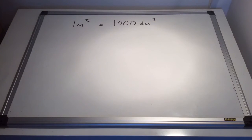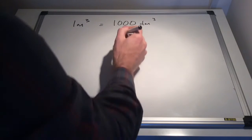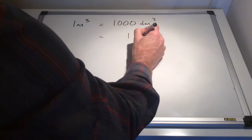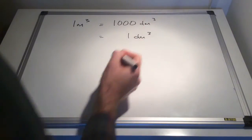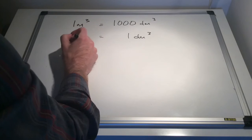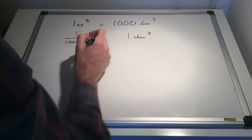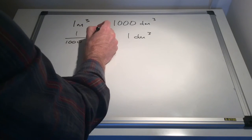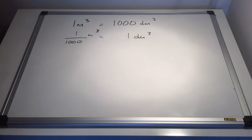I'd better just spend a minute explaining the conversions for you. So you can see on the board there, one cubic metre is equivalent to or the same as 1000 cubic decimetres. So therefore, one cubic decimetre will be 1 over 1000 cubic metres. So that's where that conversion comes from.